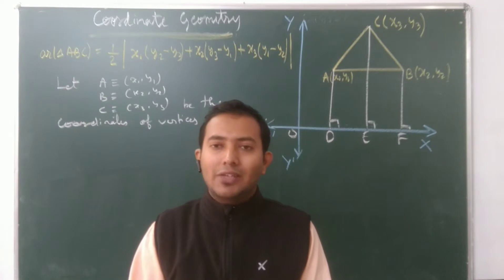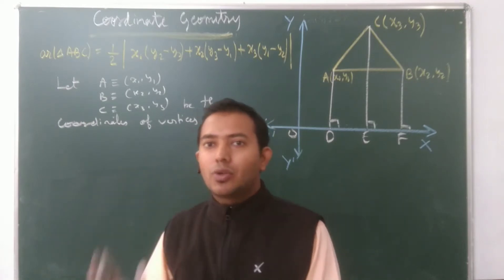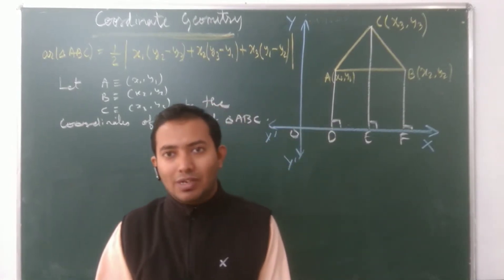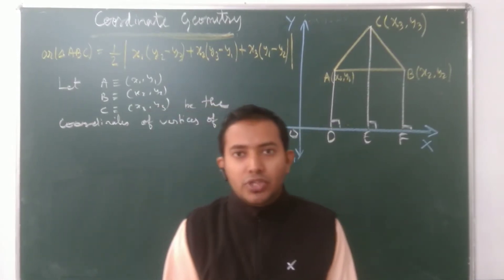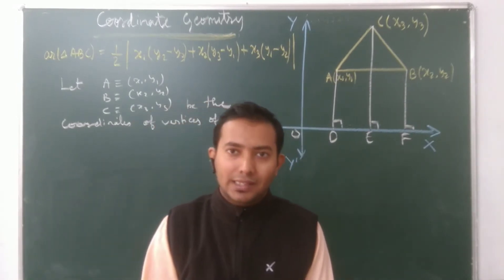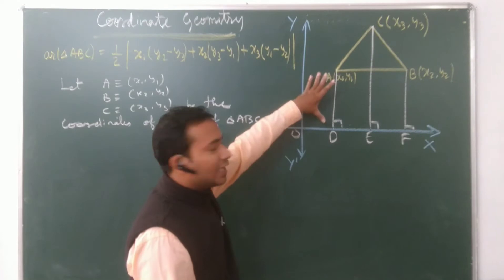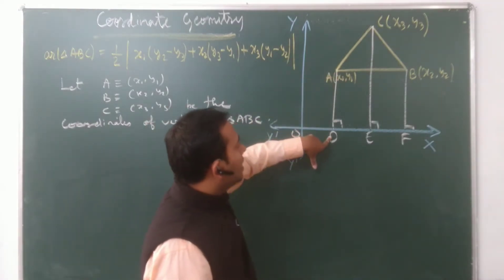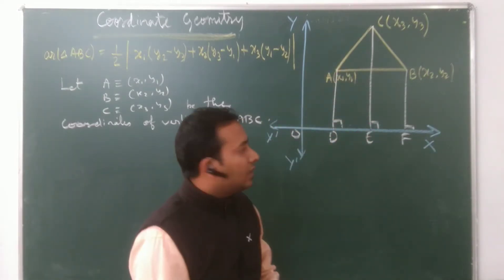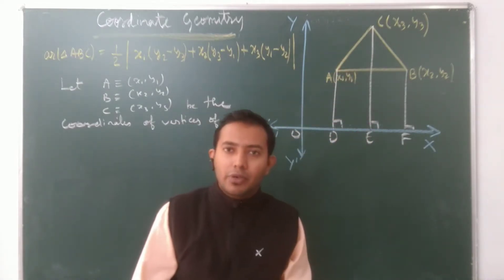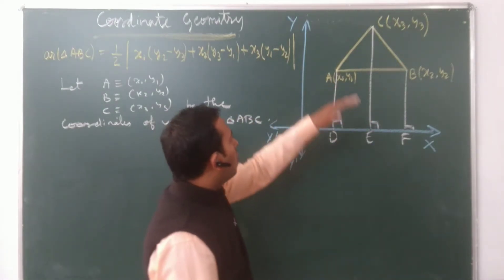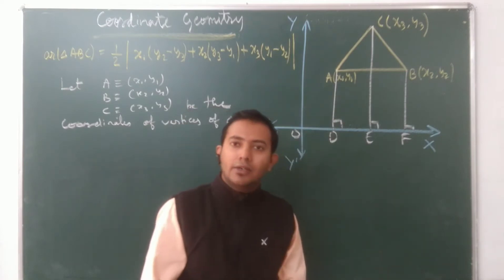First we are going to label the coordinates of triangle ABC as X1, Y1; X2, Y2; and X3, Y3. Then we will draw perpendicular lines from the vertices of the triangle to the X-axis. We have AD, CE, and BF as perpendicular lines on the X-axis. You may check this on the Y-axis too — you will get the same result.